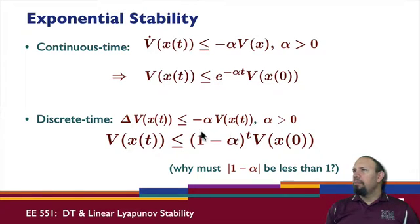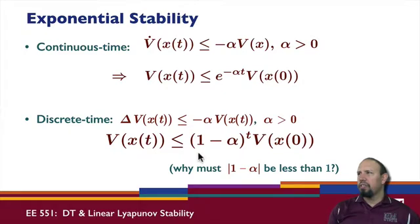In discrete time, if our difference is less than or equal to minus alpha V, then we actually have this difference equation. Now, how come I have 1 minus alpha raised to the power of T as opposed to just minus alpha raised to the power of T? Well, the reason is that delta V is equal to V of X of T plus 1 minus V of X of T. So there's actually a V of X of T on this side and on this side. So I take it over to the other side, and that's how we get this difference equation.